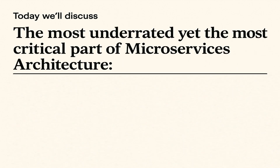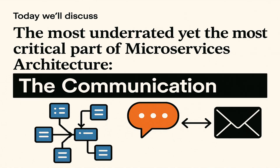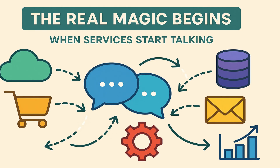Today we will discuss the most underrated yet the most critical part of microservices architecture: the communication. Microservices architecture does not only mean breaking things into small manageable services. The real magic begins when these different services start talking to each other and get things done collectively.